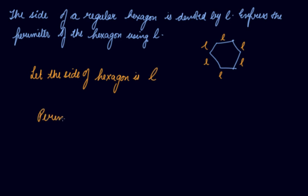The perimeter of hexagon is equal to how many sides are there? L, L, L, L, L—1, 2, 3, 4, 5, 6 sides. So 6 times L. The perimeter of hexagon is 6 times L.